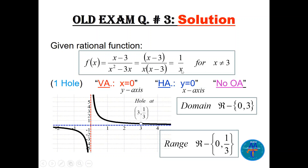Replacing x = 3 in the simplified function gives y = 1/3, so the hole (missing point) is at (3, 1/3). The domain is all real numbers except x = 0 (vertical asymptote) and x = 3 (missing point). The range is all real numbers except y = 0 (horizontal asymptote) and y = 1/3 (the y-value of the missing point).